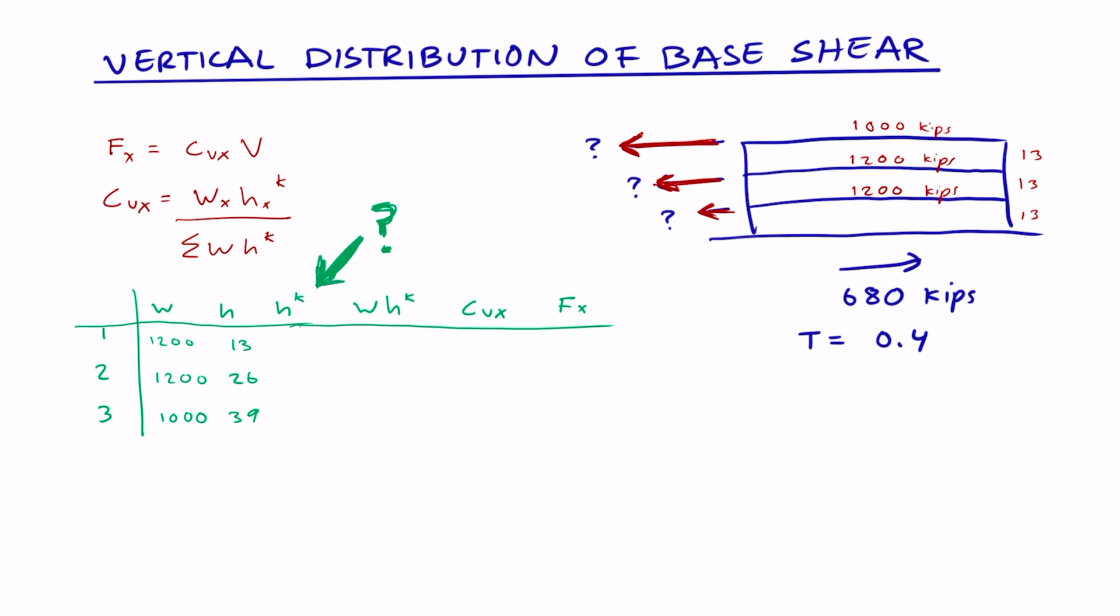Now let's find k. k is really easy to find using the following set of rules. In this case, T is 0.4, so k will equal 1 because T is less than 0.5.